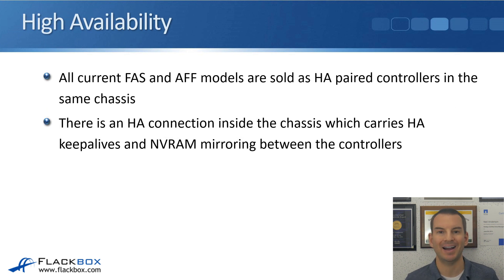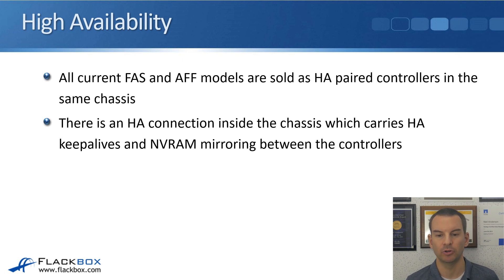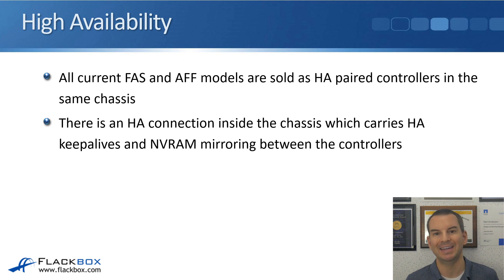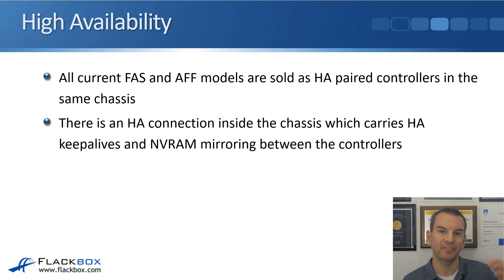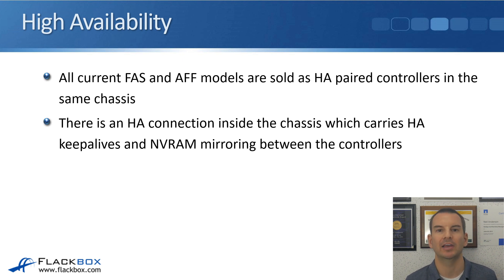The next one is high availability. This isn't classed as a network type, but it's still a network connection. All current FAS and AFF models are sold as HA paired controllers in the same chassis. There's an HA connection inside the chassis which carries HA keep-alives and NVRAM mirroring between the two controllers. If one controller fails, it will stop sending keep-alives over the HA connection, and the other controller will know it has to take over the failed controller's storage. We'll talk about NVRAM mirroring again when we start talking about WAFL.